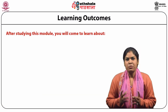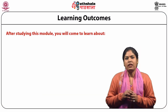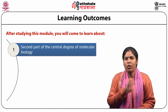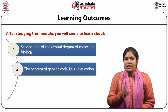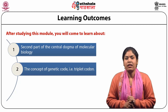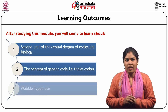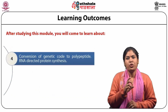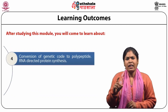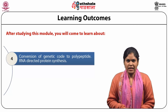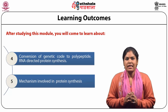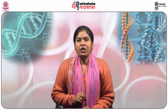After studying this module, you will come to learn about the second part of the central dogma of molecular biology, the concepts of genetic codon — that is a triplet codon — the wobble hypothesis, conversion of genetic code to polypeptide, RNA-directed protein synthesis, and the mechanism involved in protein synthesis. Translation is the process of protein synthesis.